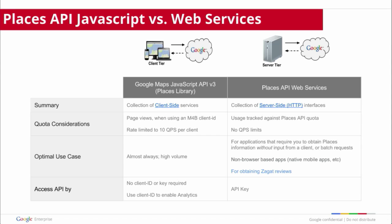There is a JavaScript version as well as a web service version of the Places API. Typically, you want to use the JavaScript version if you can — it's very easy to use and well integrated with the Google Maps API. When you want to use the web service version is typically when you need to call it from a server, when you don't have a client application, or when you need to make a lot of bulk or batch requests. One thing to note, however, is that those Zagat reviews are only currently available in the web service. So if you want to incorporate those premium editorial reviews, you do need to be using the web service to get that information.